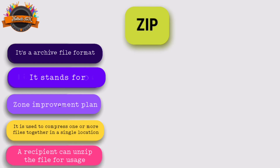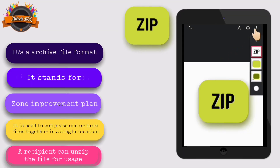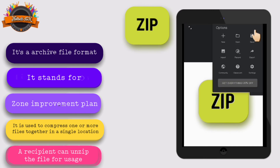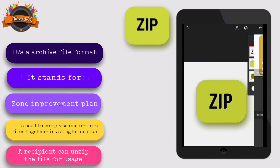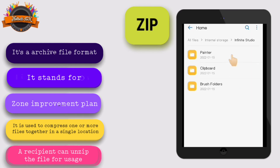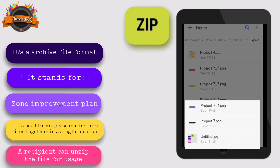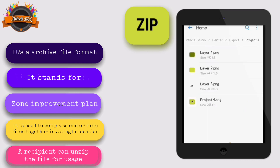A person can unzip the file for usage. Save the graphic work in ZIP format. Then go to File Manager, go to the Infinite Studio folder, and go to ZIP Project in Export. Uncompress the ZIP project. All layer images are saved in PNG format.